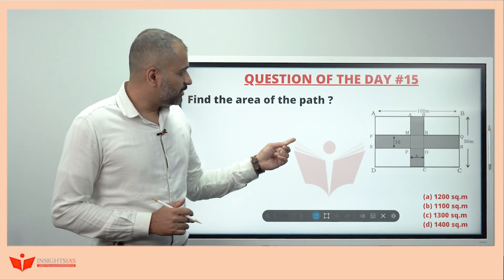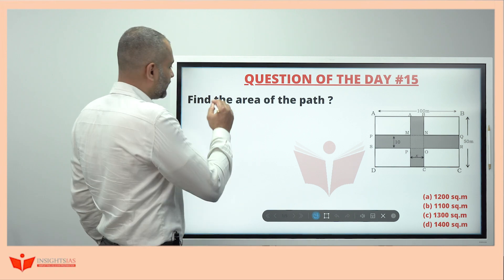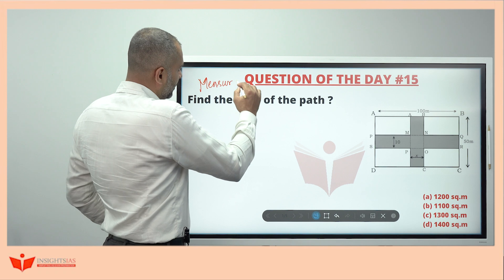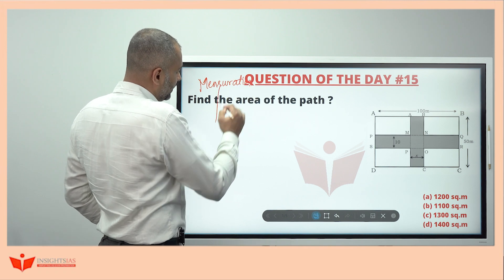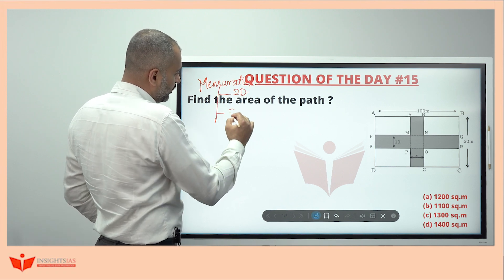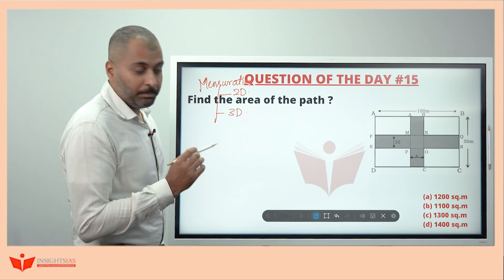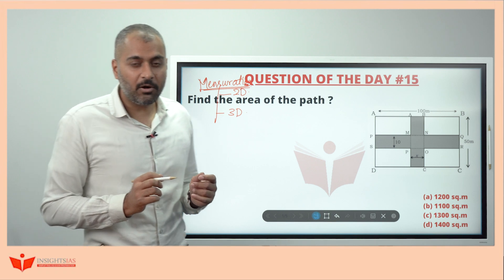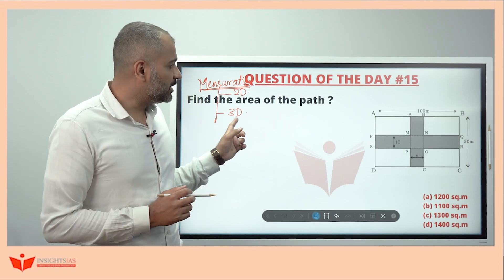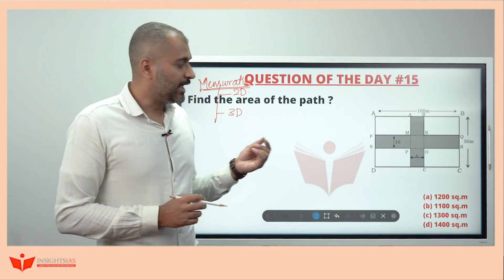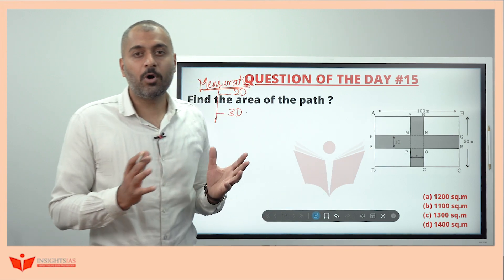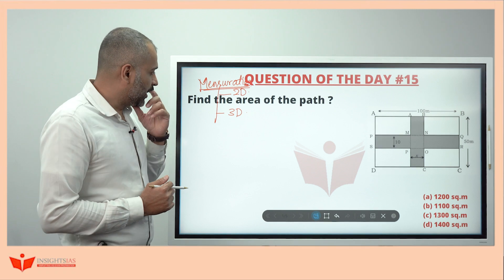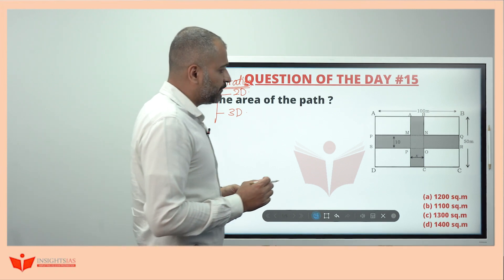This question I have picked from mensuration. The topic here is mensuration, which covers 2D as well as 3D equations. Mensuration is the science of measuring lines, angles, shapes — that can be surface area, volume, or space occupied.